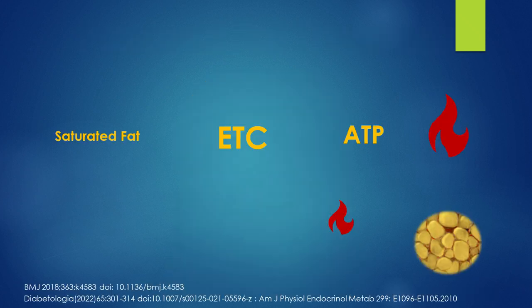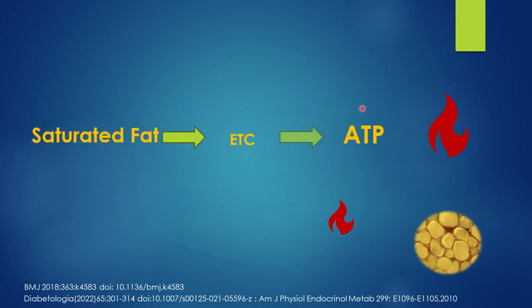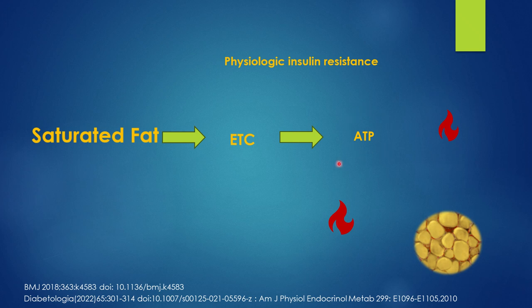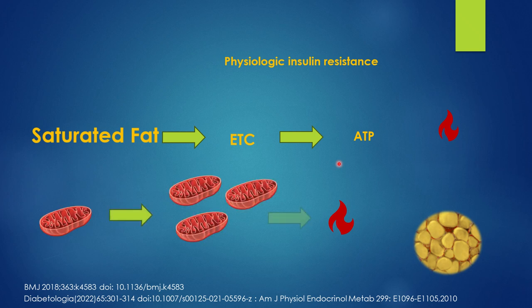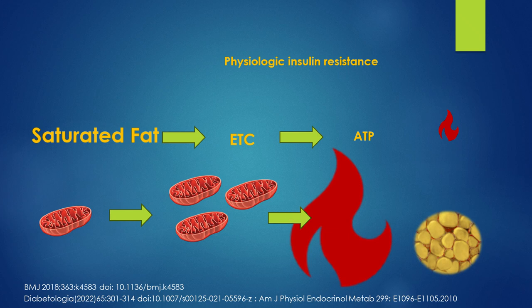Saturated fat also has 16 to 18 carbons, but without double bonds, so it doesn't act like sugar. Saturated fat easily saturates your electron transport chain. So if you eat a lot of saturated fat, it shuts down the electron transport chain and decreases ATP. Your body detects low ATP and tells the cells: we're low in energy, let's make more mitochondria. You then efficiently metabolize and use up the energy, there's more ATP, but there are just more mitochondria — they're efficient — and you lose weight and maintain homeostasis.